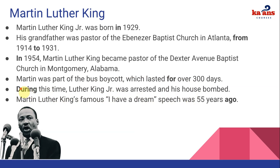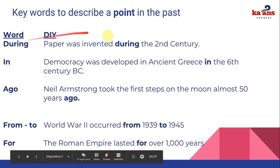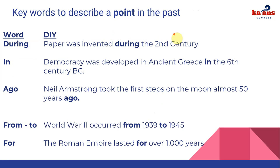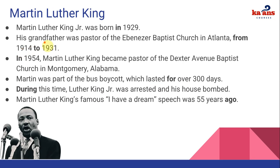Finally, Martin Luther King's famous 'I Have a Dream' speech was 55 years ago — using the vocabulary word 'ago.' As you can see, we used all of the words to describe a point in the past. In this case we talked about Martin Luther King Jr., but we used 'during,' 'ago,' 'from...to,' and 'for.'